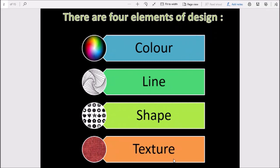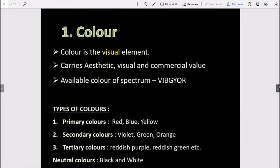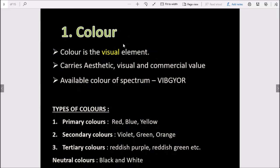Our first element is color. Color is the visual element. It carries aesthetic, visual, and commercial value. When we want to buy any cloth or dress, color plays a very important role. We might like the design, but if we don't like the color, we won't purchase that particular fabric or dress. So color carries significant commercial value. Available colors of the spectrum are VIBGYOR.